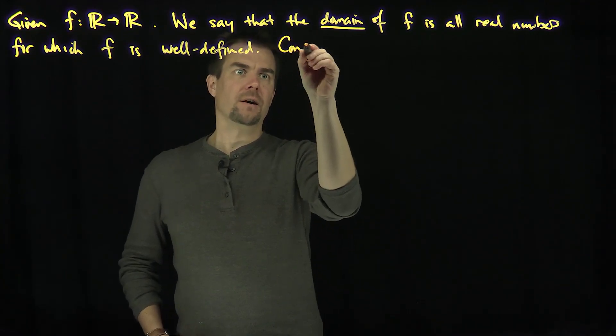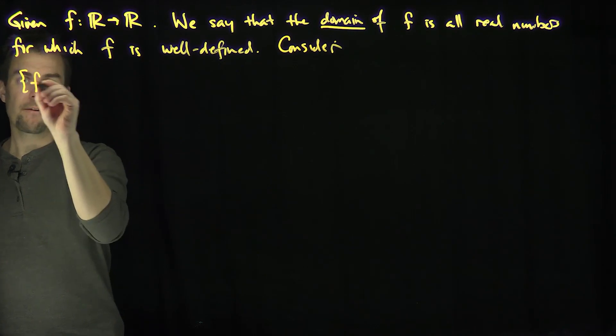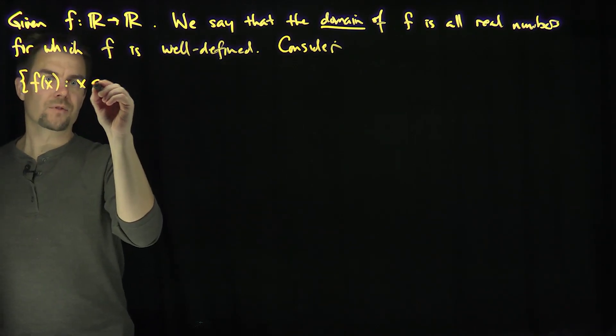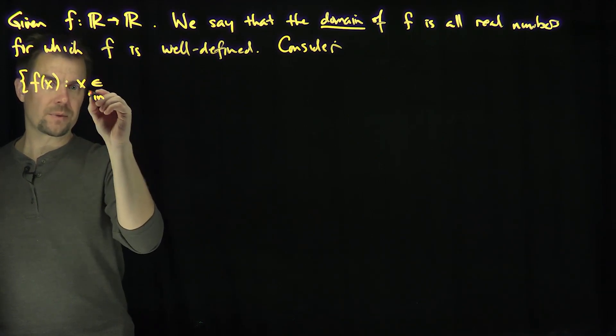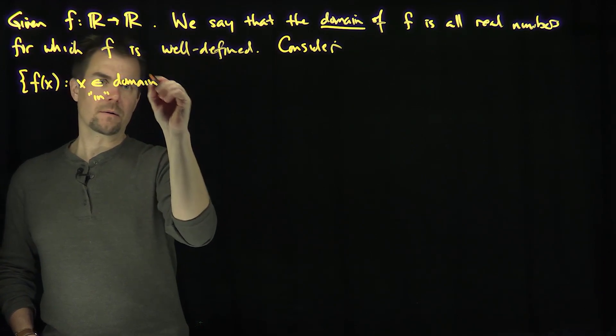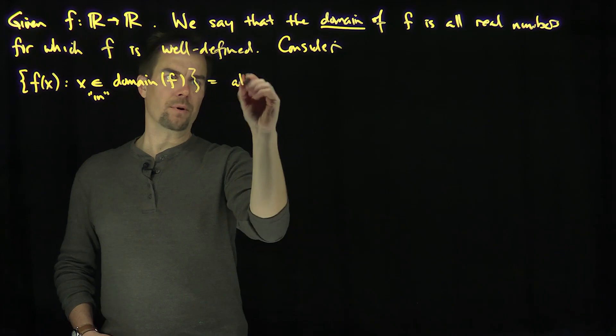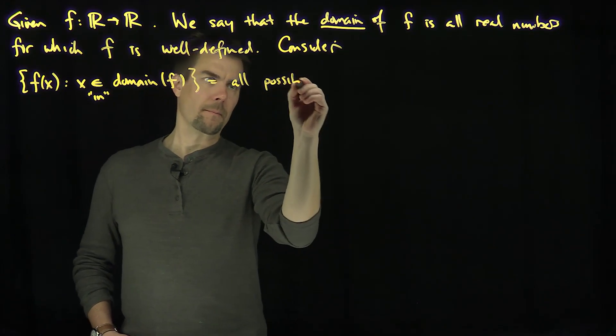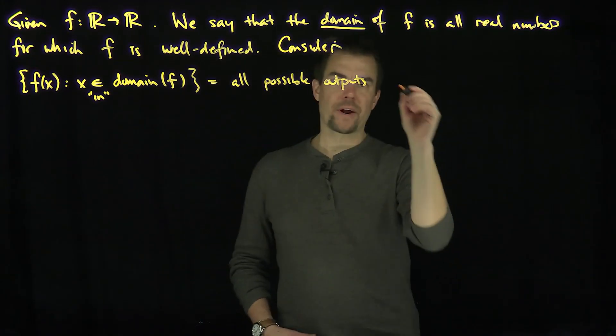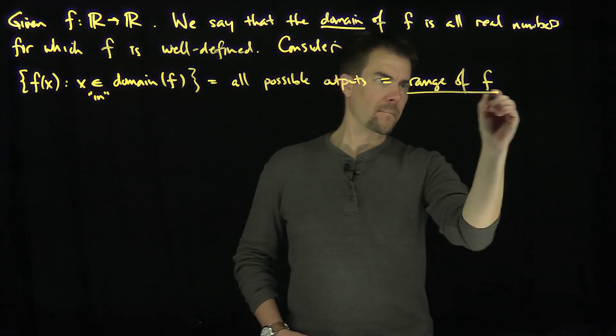Then we consider the set of all points f(x) such that x comes from the domain of f. This means in our mathematical language the domain of f. So all the possible outputs, this is all possible outputs, and this is called the range of f.